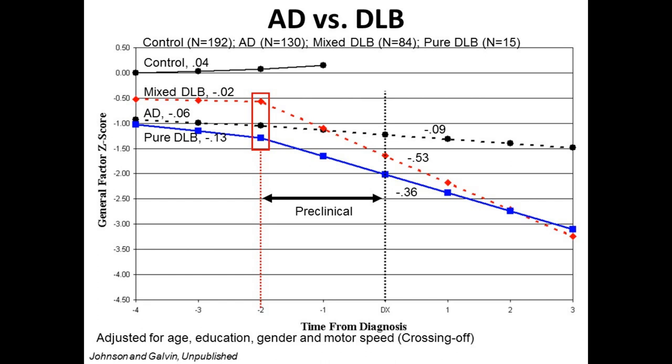We can do the same thing for dementia with Lewy bodies. We have Alzheimer's disease in the black dotted lines, people with pure dementia with Lewy bodies in the blue line, and people who have mixed disease — both Alzheimer's disease and Lewy body dementia — in the red dotted lines. You can see that if you have a mixed dementia with two different causes, your rate of change is much faster than the other groups. So two diseases is worse than one disease.